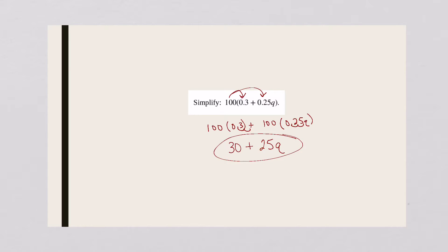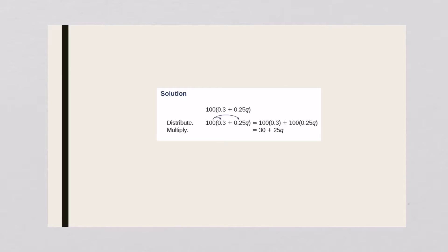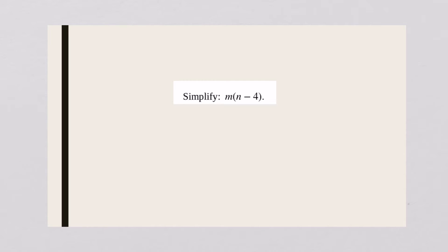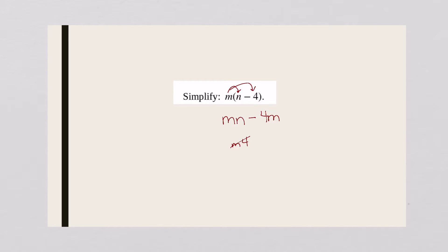That's as good as that gets. We've got more variables in this problem — it's okay, just use the rules that you know about variables. m times n and m times a minus four: m times n is mn, you've got a minus sign there, m times four is 4m. Please don't put m4 — it looks bad. Write it as 4m.